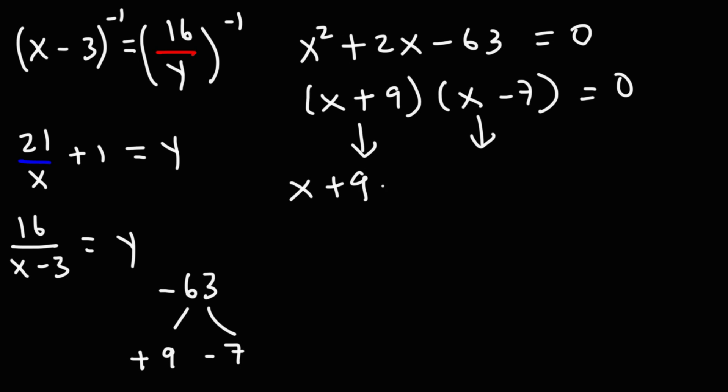Now let's set each factor equal to 0. So if we subtract both sides by 9, we get x equals negative 9. Over here, if we add 7 to both sides, we get that x is positive 7.